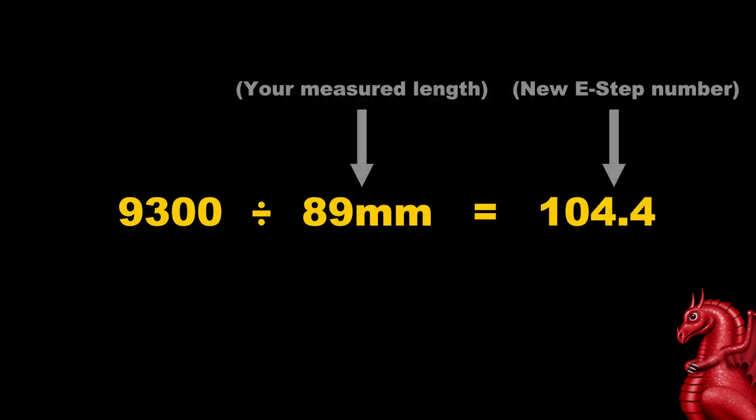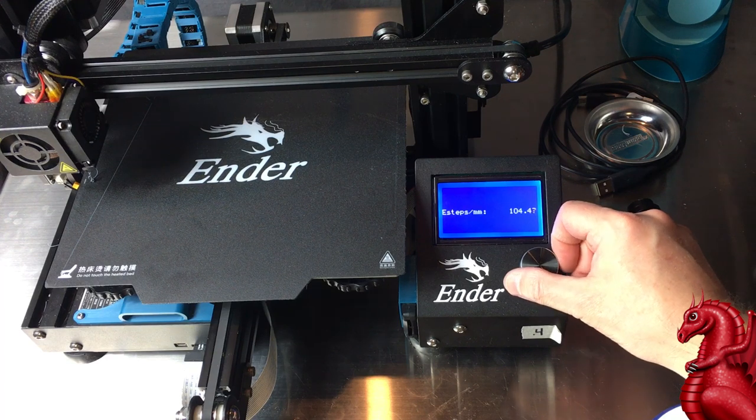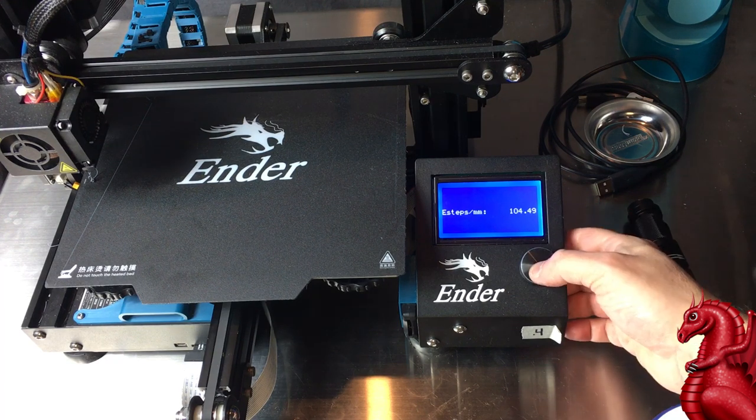Next calculation, we're going to take that 9300 and divide it by however much filament fed through your system. In my case it's 89 millimeters. You could be over—it you could have over extruded and it might be 105 or 106. You could have 92 millimeters, but whatever amount of filament you fed through your system is that second number. So 9300 divided by, in my case, 89 gives me a new e-step number of 104.4. So I'm going to go back to my e-steps and dial that new number in: 104.4.